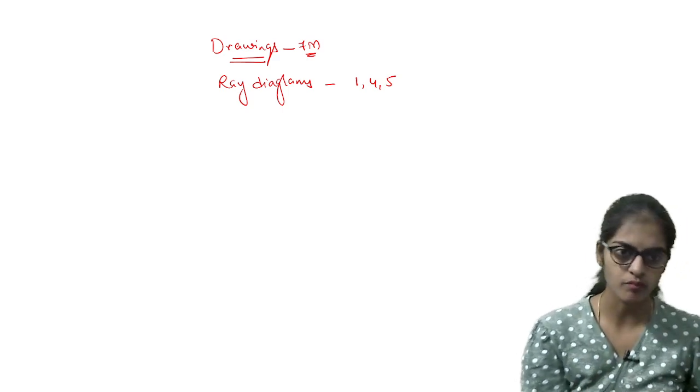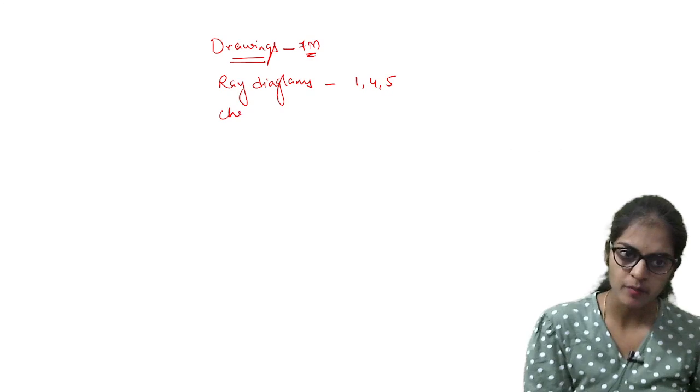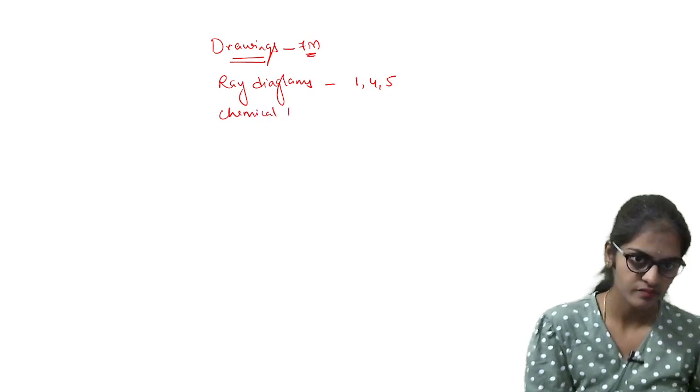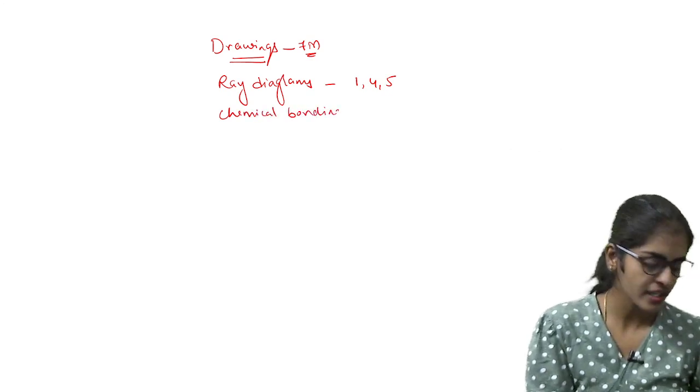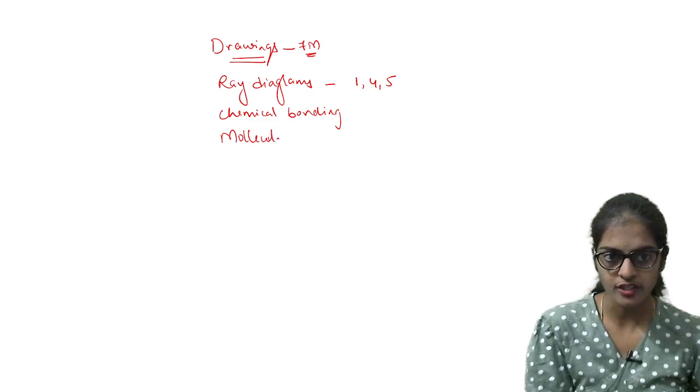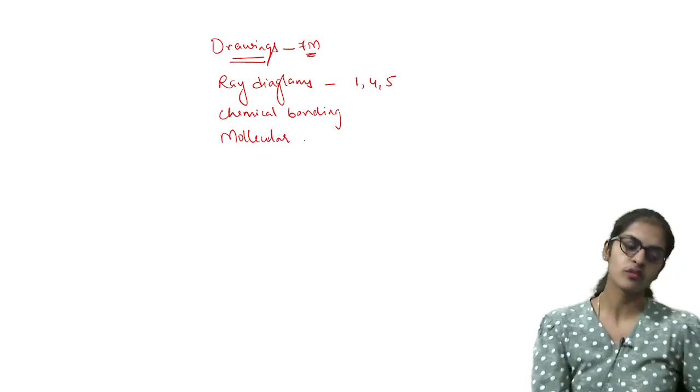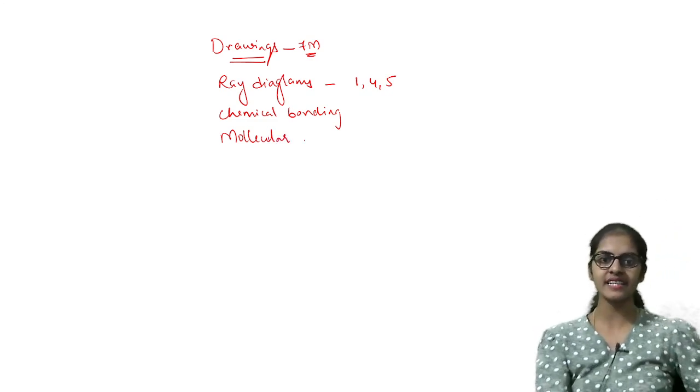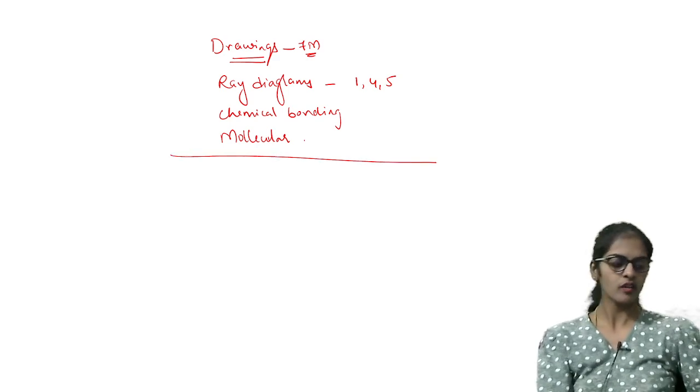And after that, from chemical bonding chapter, you have diagrams. Molecular structure diagrams. So molecular structure diagrams, triple bond, hybridization, these diagrams you will learn.